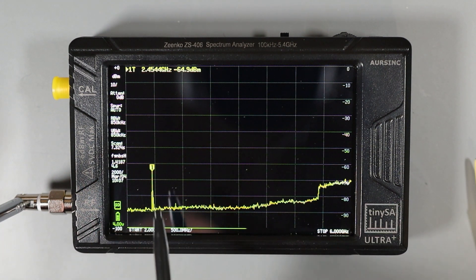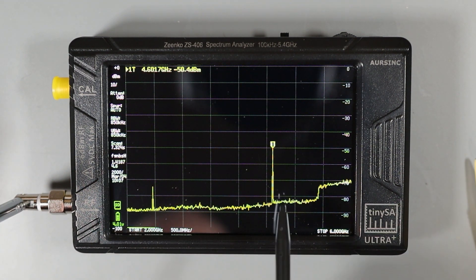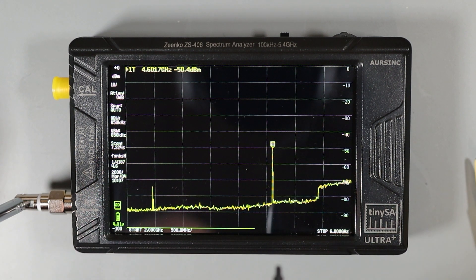This signal spike you're seeing here at around 2.4 gigahertz is the wi-fi router on the other side of the room. And this signal spike is the wi-fi router on the other side of the house that runs at a higher frequency.